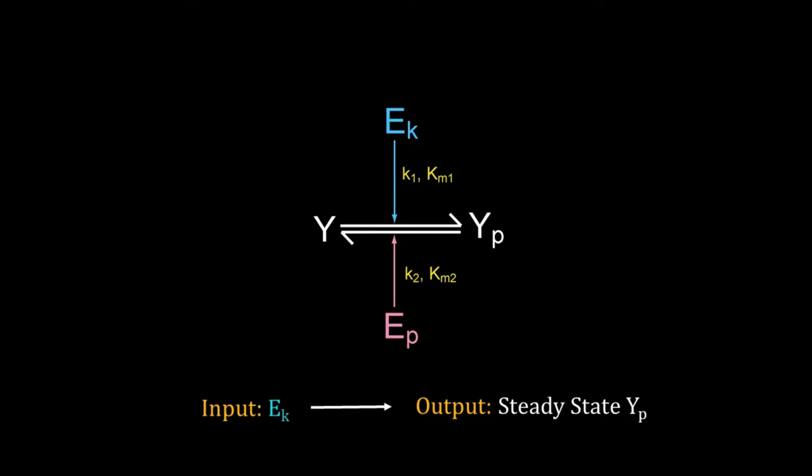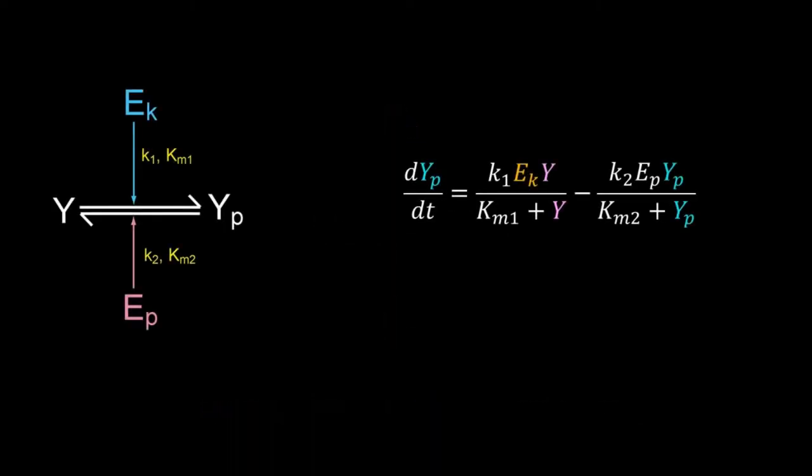And the steady state level of Y_p is the output. I will use an ODE based model to understand the possible input-output behavior of this switch. Here is the ODE for this model. We have used Michaelis-Menten formulation for both reactions. Assume that the total amount of Y is constant.